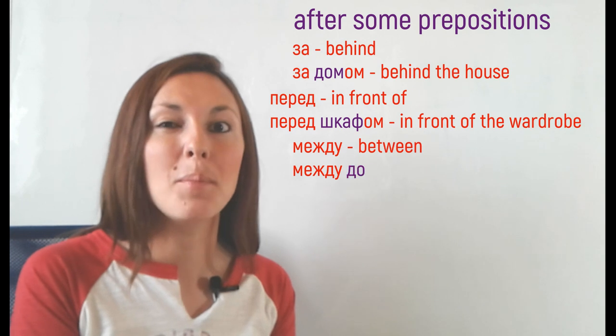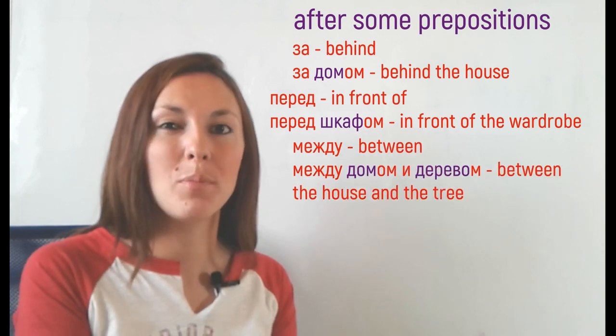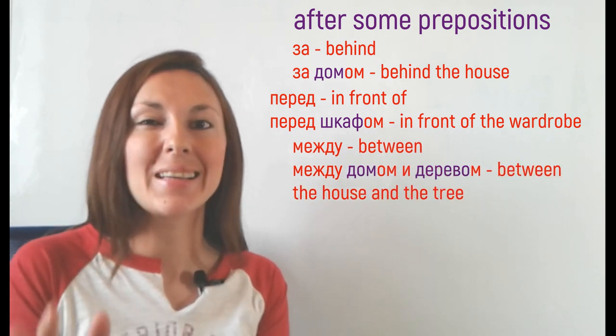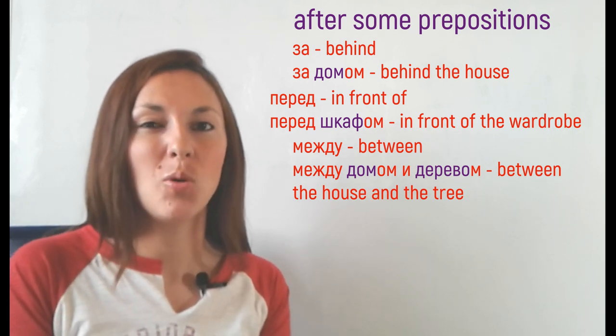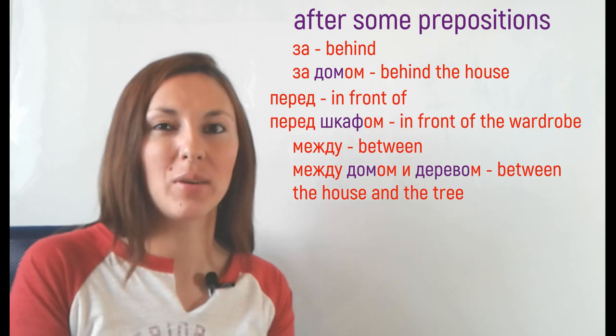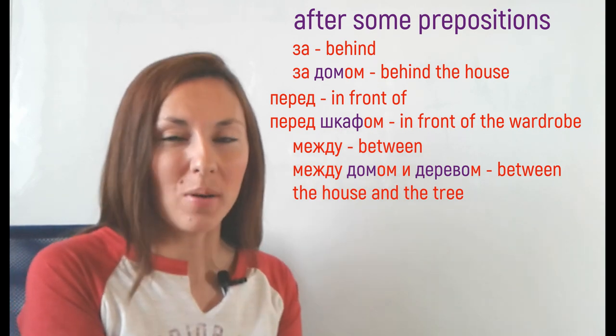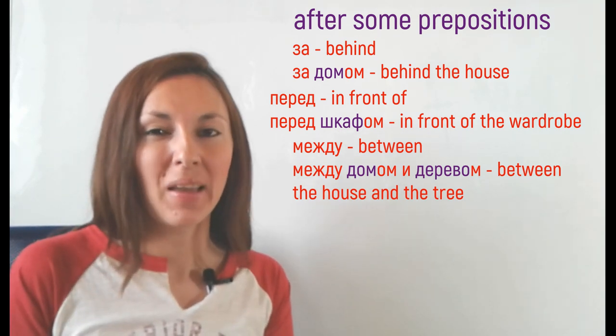Then BETWEEN, МЕЖДУ. МЕЖДУ ДОМОМ И ДЕРЕВОМ. ДОМ is a house, ДЕРЕВО is a tree. We add ОМ and we get МЕЖДУ ДОМОМ И ДЕРЕВОМ.